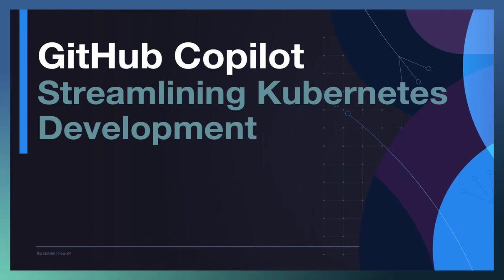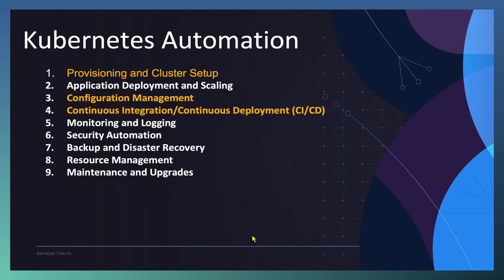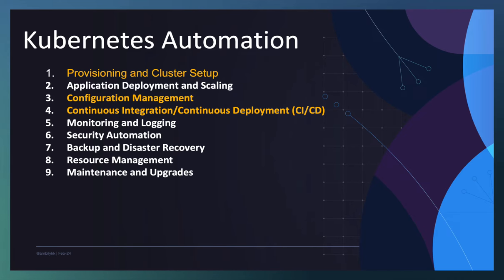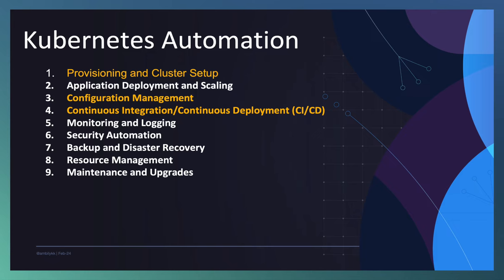Hello all, welcome to a new episode of GitHub Copilot. In today's episode we are looking into the streamlining of Kubernetes automation with the help of Copilot. When we do Kubernetes automation, we plan different areas: the automation can be done as part of the provisioning and cluster setup, or it can be the application deployment and scaling aspects, or managing the entire configuration as an external system altogether. CI/CD will be integrated to any of the CI/CD systems — it can be GitHub Actions, Jenkins, or any external CI/CD systems altogether.